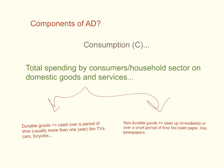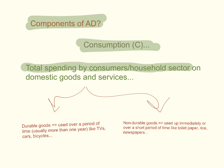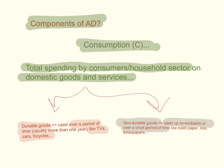Let's look at each component of Aggregate Demand. The first is consumption spending — the total spending by consumers or the household sector on domestic goods and services. This only includes domestic goods and services, because foreign goods and services count as the country's imports. Consumers spend on two types of goods: durable goods, which are used over a period of time (more than one consumption cycle, usually more than one year) such as TVs, cars, and bicycles; and non-durable goods, which are used up immediately or over a short period of time, such as toilet paper, rice, and newspapers.